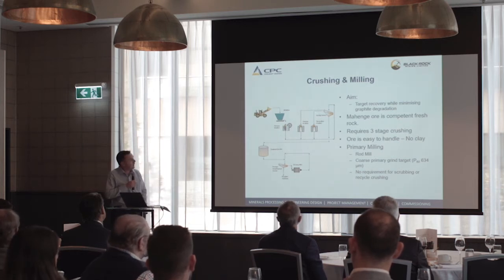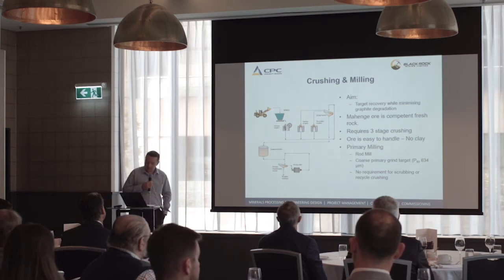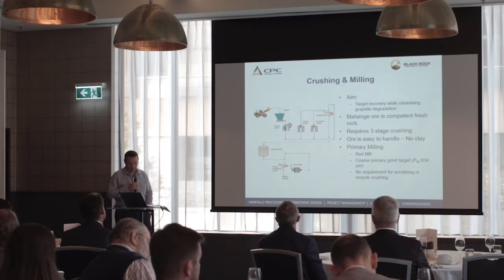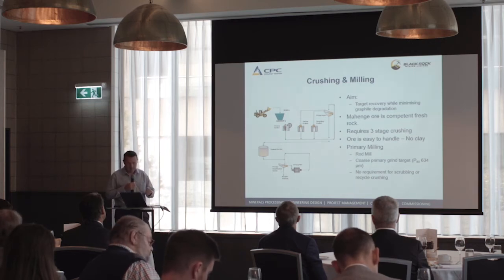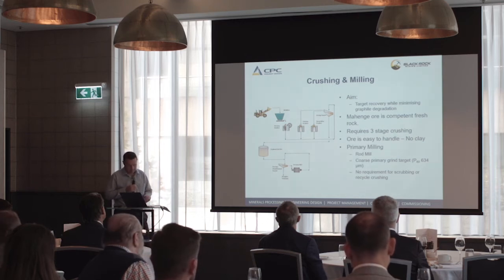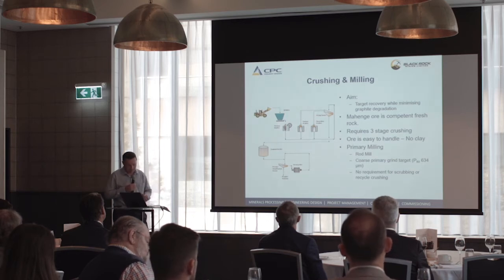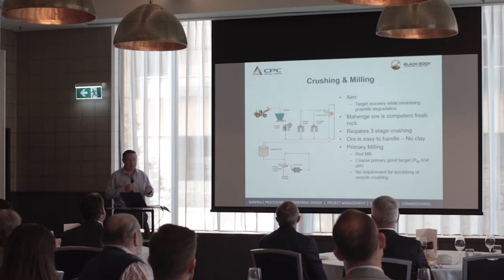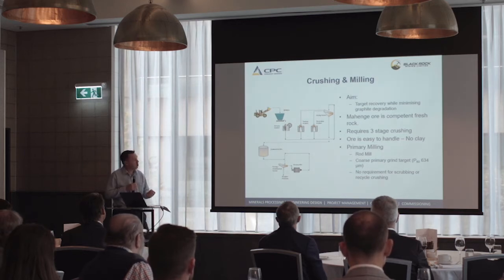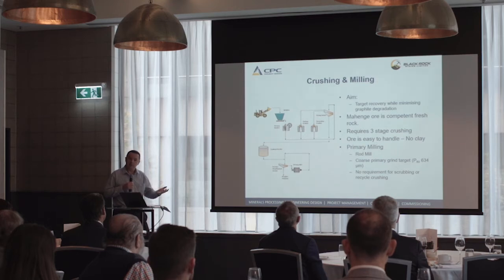This is the crushing and milling flow sheet for Mahenge. The aim is to target recovery while minimising graphite degradation. The Mahenge ore is competent and requires three stage crushing, achieved with jaw crushing followed by two cone crushers. Being hard rock it's not wet or sticky. We use a crushed ore bin to create surge between crushing and milling, and a rod mill as the primary mill — selected to minimise fines generation. We're targeting a grind size of P80 of 634 microns to avoid breaking down the larger flakes. There's also no scrubber since we don't have clays to wash out.